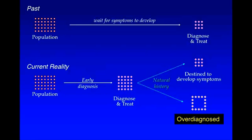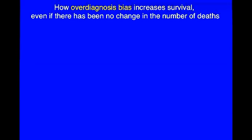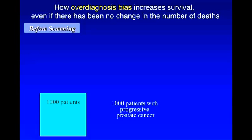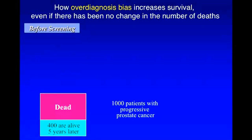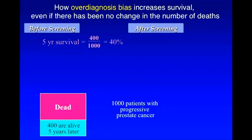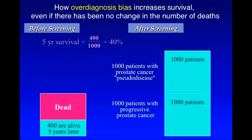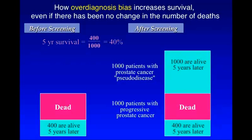How does that all relate to survival? Well, that over-diagnosed fraction — those patients tend to survive a long time. Here's how over-diagnosis bias increases survival, even if there's been no change in the number of deaths. Imagine before screening that a thousand patients were diagnosed with progressive prostate cancer. Five years later, 400 are alive. What's the five-year survival? It's 400 over 1,000, or 40%. Now imagine after screening — those same thousand patients with progressive prostate cancer are diagnosed, but now a new fraction is diagnosed: a thousand patients with prostate cancer pseudo-disease.